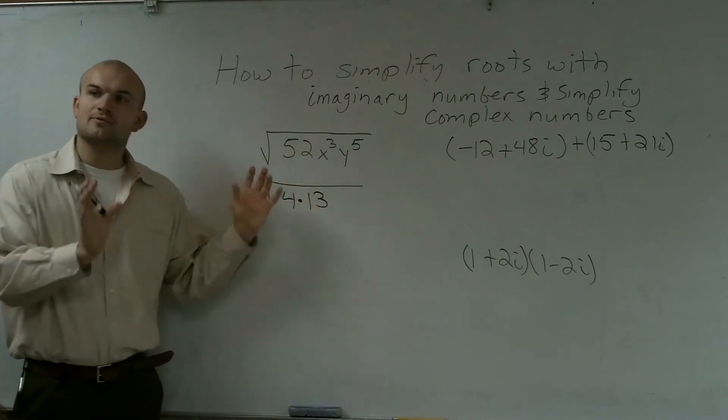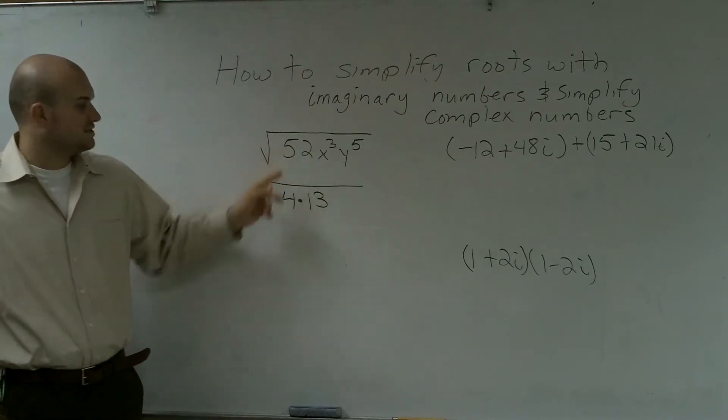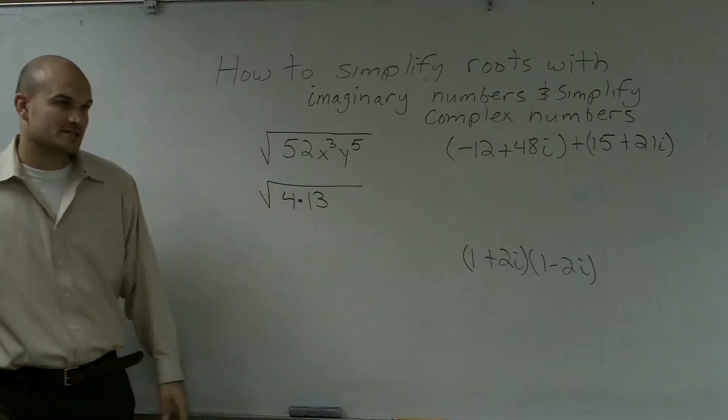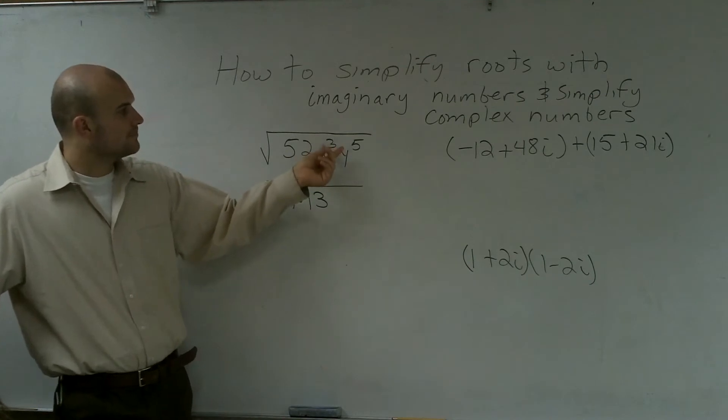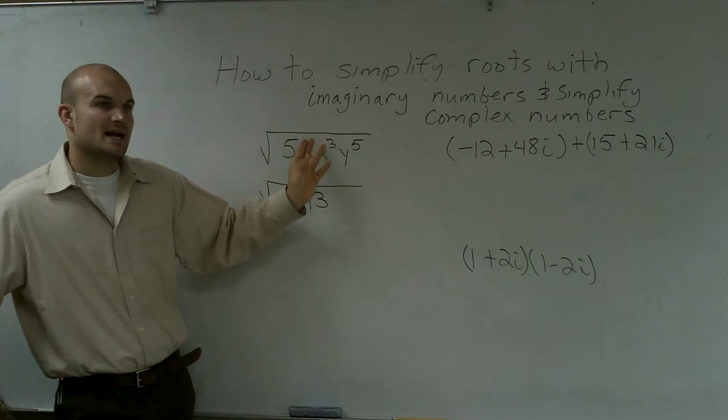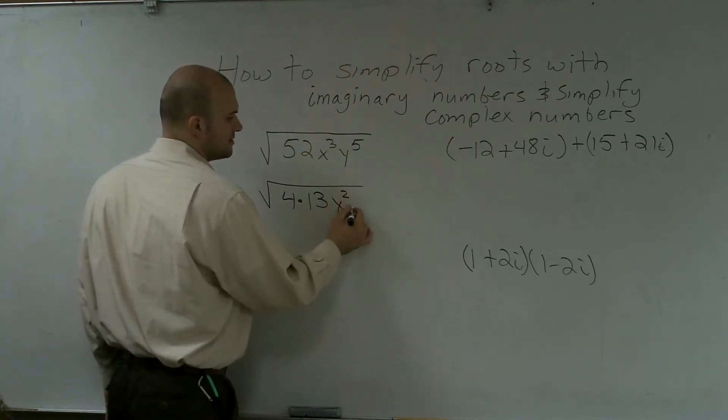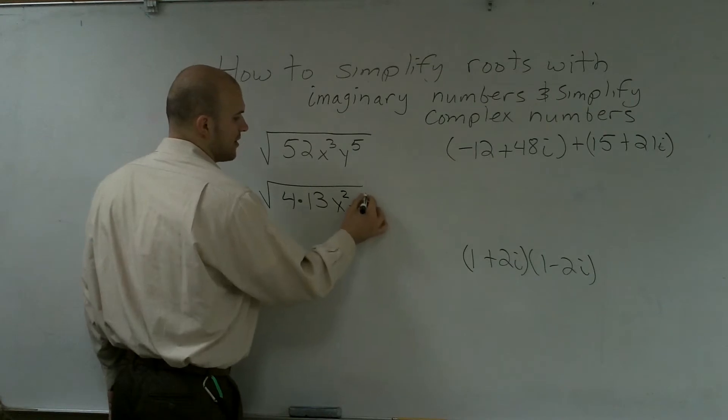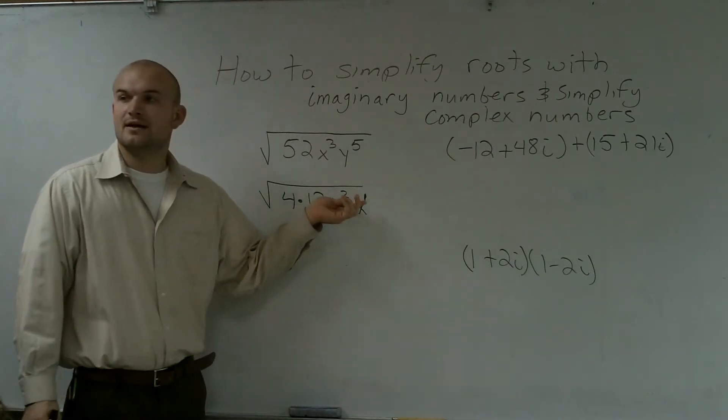So what I'm doing is I'm just rewriting what's in the root. So rather than writing 52, I'm going to rewrite it as 4 times 13. Now, the same thing can be shown for my exponents. Rather than writing x to the third power, I can write that as x squared times x to the first power.